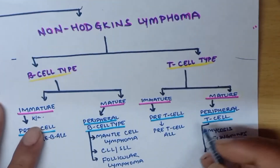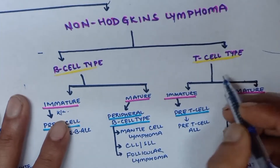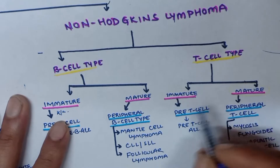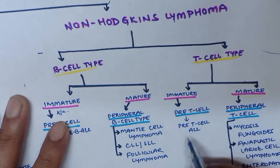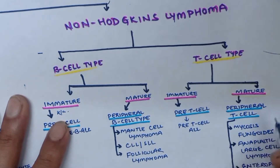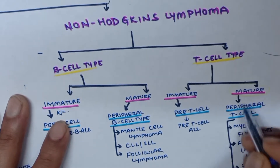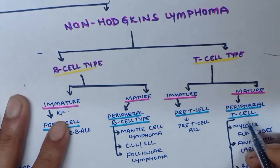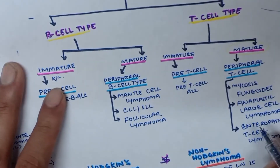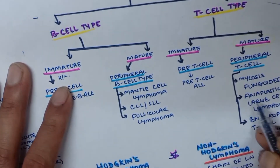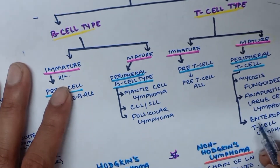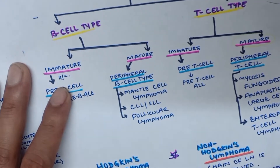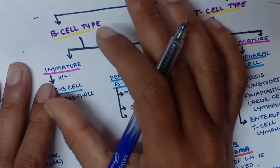In T-cell type, immature forms are precursor T-cells, that is pre-T-cell ALL. Mature forms are called peripheral T-cells, with examples including mycosis fungoides, anaplastic large cell lymphoma, and enteropathy T-cell lymphoma.